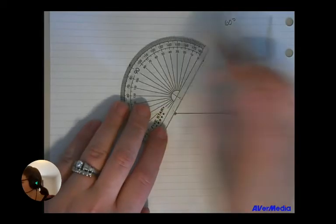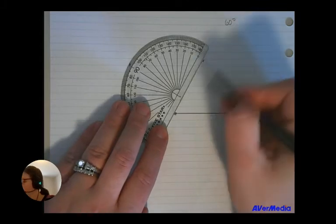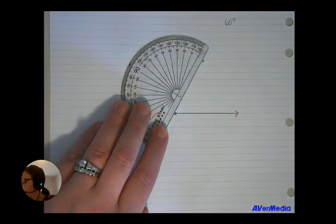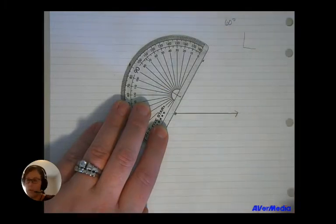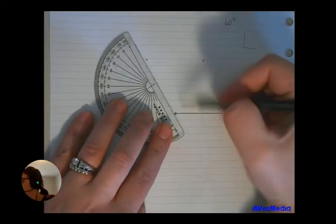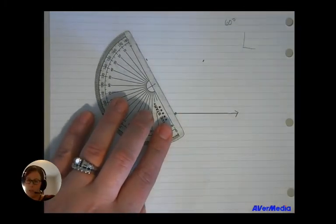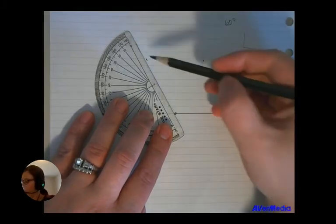So I'm going to line up here and ask myself, does that look like an acute angle? Does that look smaller than that 90 degree corner? Or does this one look like an acute angle so it looks smaller than that 90?